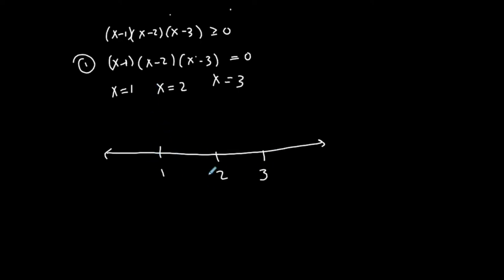I'm showing the number line from 1, 2, 3. Obviously it goes to negative infinity one way and to positive infinity the other way, but I'm only focusing on these points, and they happen to be close together so that's fine.